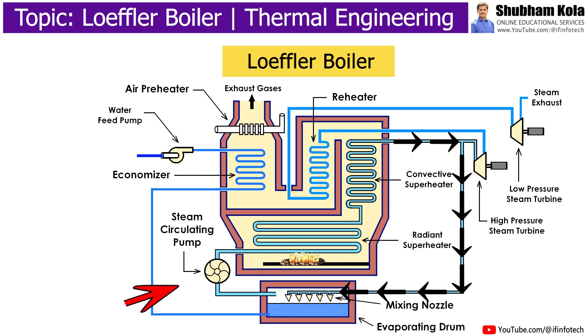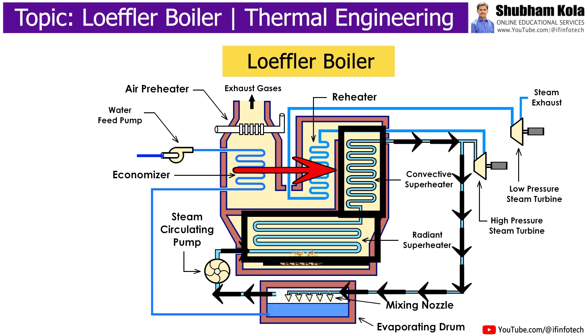The steam circulating pump draws saturated steam from the evaporating drum and passes it through the radiant and convective superheater, where the steam is heated to the required temperature.